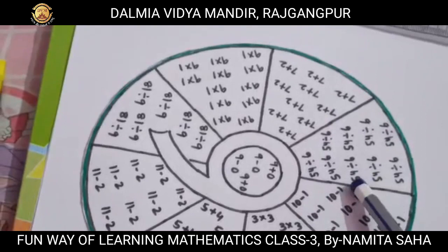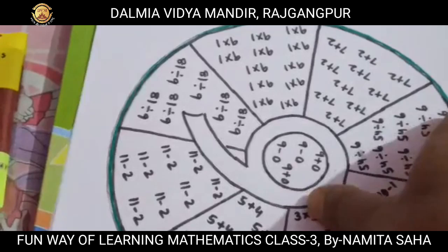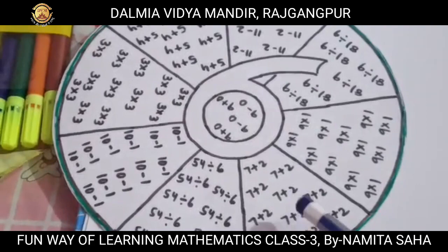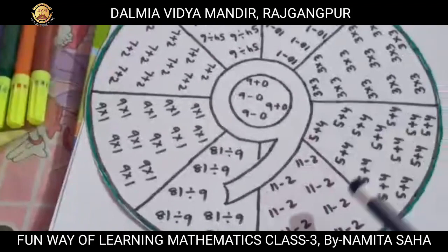9 can also be represented as 10 minus 1. Here also you can see 54 divided by 6 — this also gives you 9. Here also, 7 plus 2 is 9. And 9 into 1 is also 9. So all these are different forms of 9, and 9 can be written in many ways.